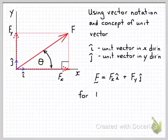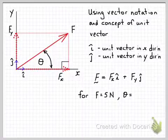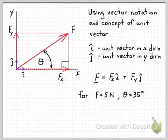So if we use the same values for F and theta that we had previously so F equals 5 newtons and theta equals 35 degrees and we go back to our previous values that we calculated.